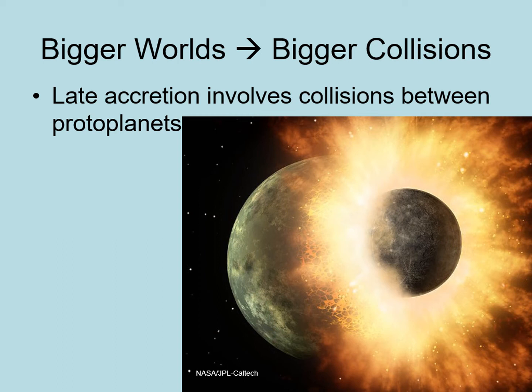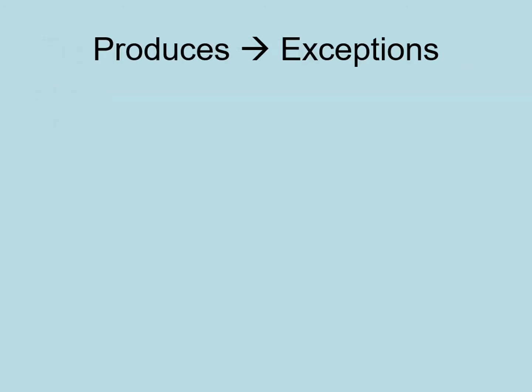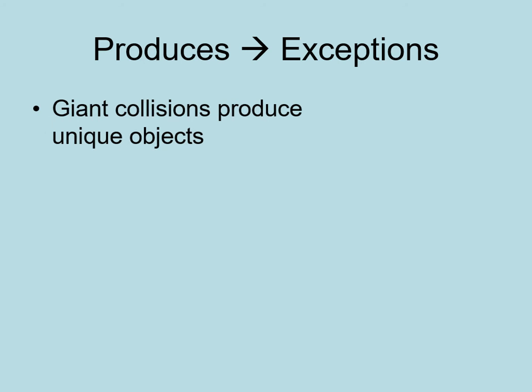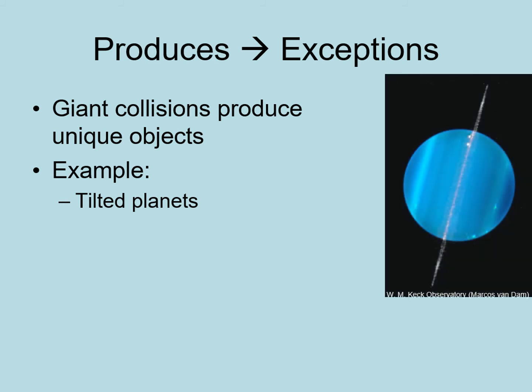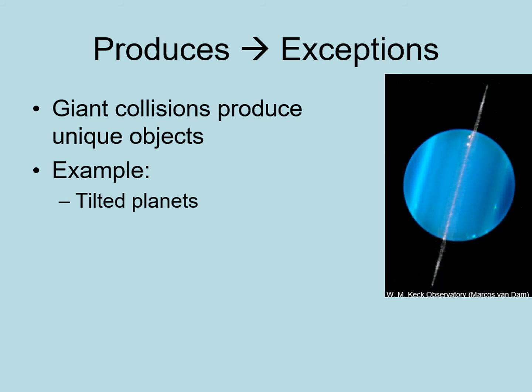Sometimes the two bodies will be virtually the same size, while other times one will be much larger than the other. Whatever the collision is like, the planet that results will be dramatically changed in some way that makes it distinct from the other worlds around it. If each giant collision is a unique event, then the scars of these collisions will be some of the characteristics that make individual planets and moons unique — the exceptions in our list of solar system trends. So a giant impact can knock a planet's spin over, giving an extreme tilt like the one Uranus has, and exceptional collisions like this can produce the exceptional objects in our solar system.